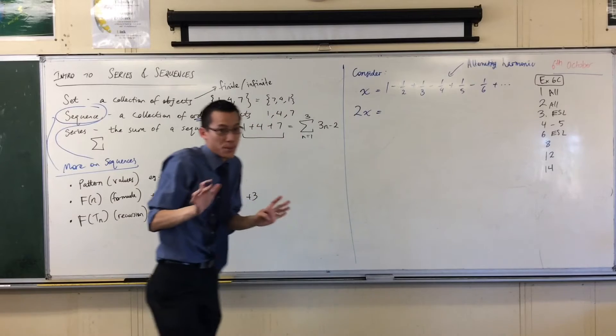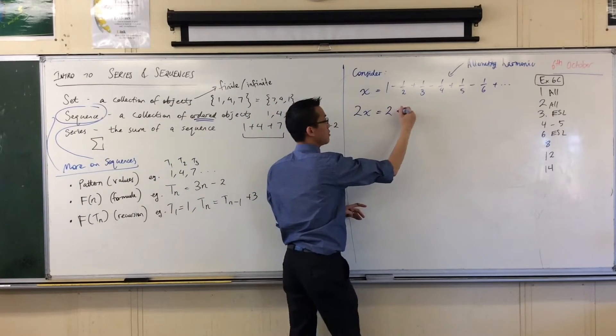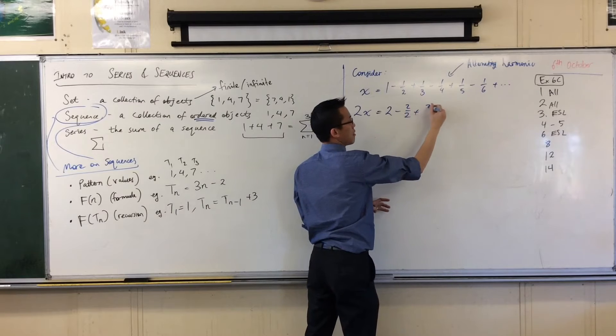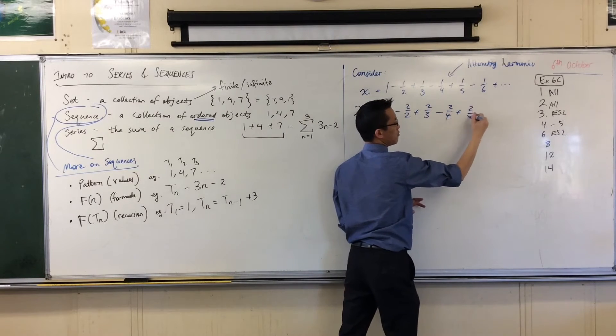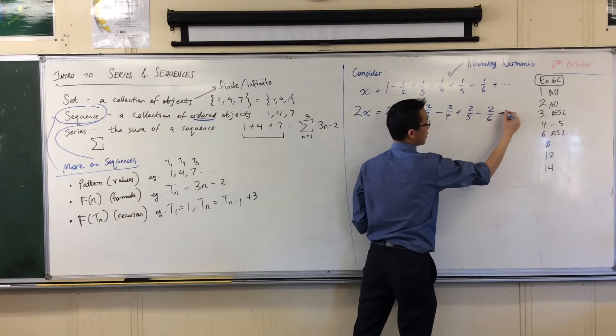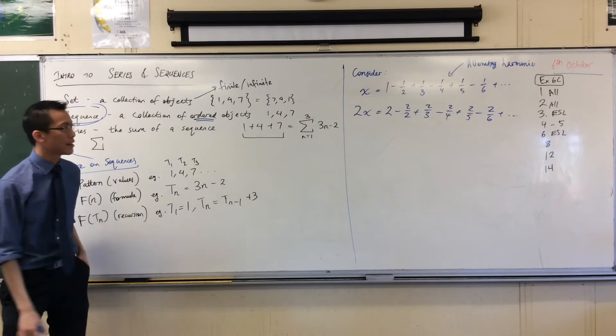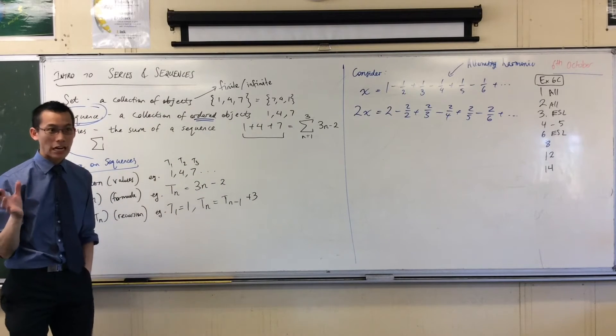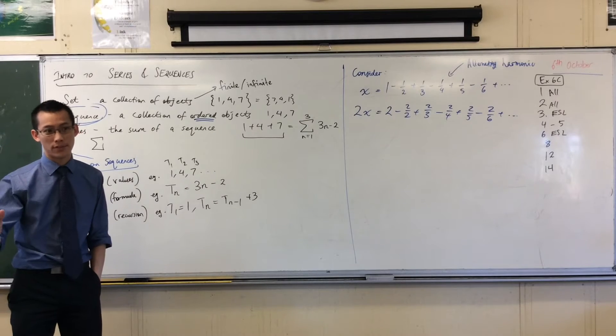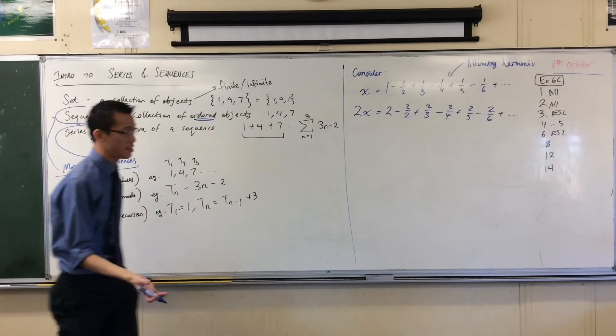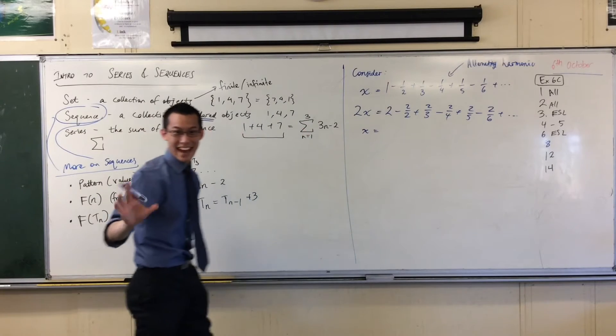So I'm just going to, I'm not even going to simplify, I'm just going to write it out all doubled. So I'm going to get two minus two over two plus two thirds minus two over four plus two fifths minus and so on. Now when I have a look at this guy, I haven't done anything unusual, anything out of the ordinary. Now I'm just going to simplify. It's just fractions and I can write them in simpler forms.